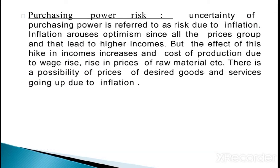Now we talk about purchasing power risk — the third kind of risk under systematic risk. Purchasing power risk means uncertainty of purchasing power due to inflation. If there is a higher interest rate in the market and goods prices are also high, that affects the purchasing power of customers. Inflation arouses optimism since all prices go up and that leads to higher income. But the effect of this hike increases cost of production due to wage rise and rise in the price of raw materials, ultimately pushing cost of production higher. There is a possibility of prices of goods and services going up due to inflation.